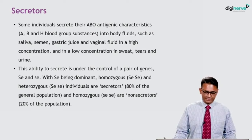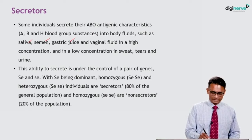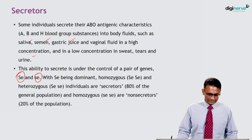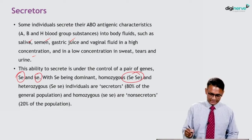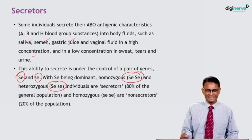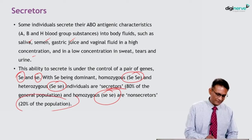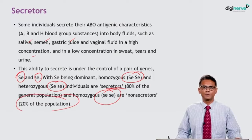A brief note on secretors: some individuals secrete ABO antigenic characteristics — A, B, and H blood group substances — into body fluids such as saliva, semen, gastric juice, and vaginal fluid in high concentration, and in low concentration in sweat, tears, and urine. The ability to secrete is under control of a pair of genes Se and se, with Se being dominant. Homozygous Se/Se and heterozygous Se/se individuals are secretors — about 80% of the general population. Homozygous se/se individuals are non-secretors — about 20% of the population.